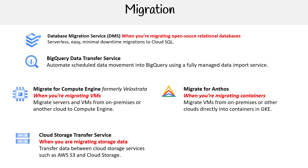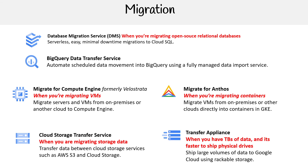Another one, and this time it's for storage, not compute — you have Cloud Storage Transfer Service. This is when you're migrating general storage data; it could be from S3, it could be from on-prem. And then there's also Transfer Appliance. This is where you are transferring storage, but you have so much data — like terabytes of data — that you need a physical drive to ship the data.